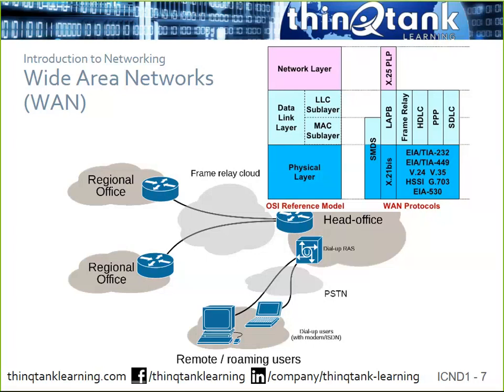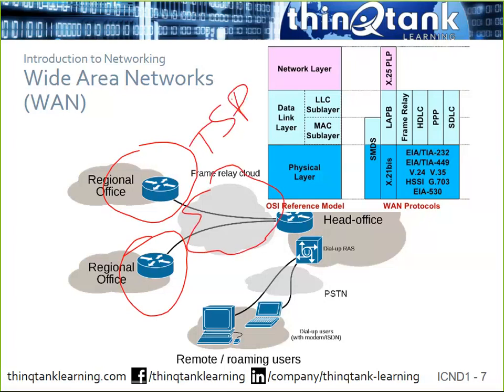We overlay our communication on top of the service provider's infrastructure. For example, if I want to connect L.A. to New York, I have the TSP cloud and I choose a method of transporting my data. The cloud can be layer two — looking like a switch — or sometimes layer three, where the service provider actually participates in your routing, like with MPLS VPN.